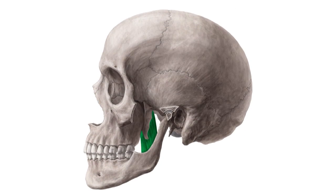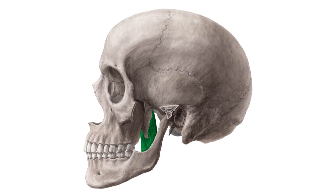The pterygoid muscles, also known as the wing muscles, are two jaw muscles located on the inner surface of the mandible. The names of the two muscles are the medial and the lateral pterygoid muscles. We will focus on the medial pterygoid muscle, which you see highlighted in green on this image.